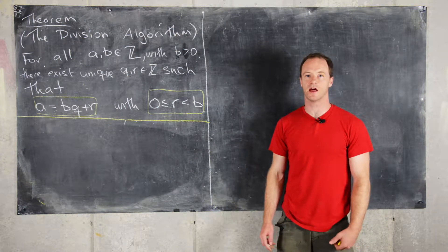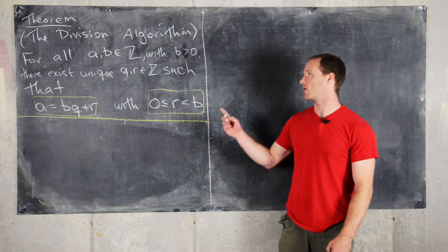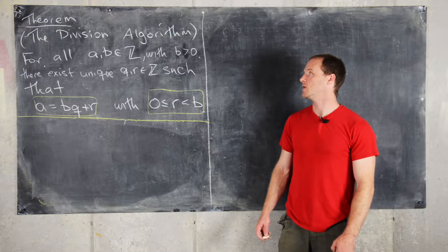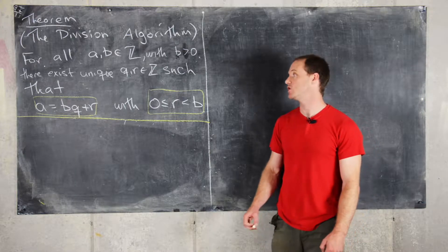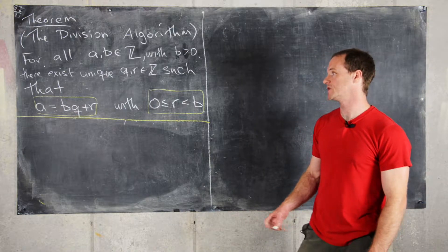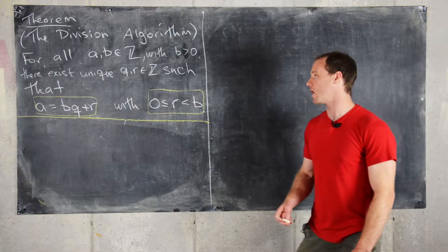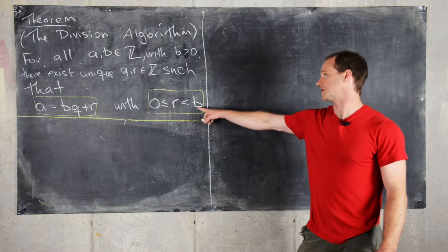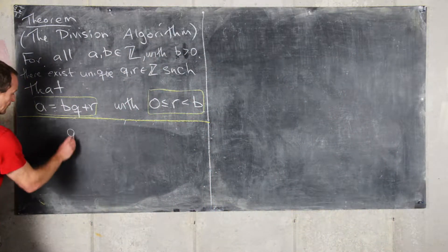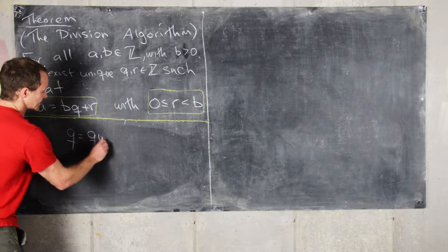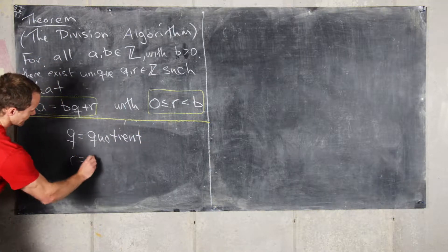Here we're going to look at a classic result in elementary number theory known as the division algorithm. It states that for all integers A and B, where B is positive, there exists unique Q and R, also integers, such that A equals B times Q plus R, where R is between 0 and B but does not include B. In this setup, Q is the quotient and R is the remainder.